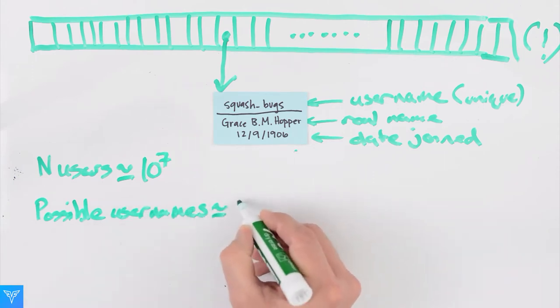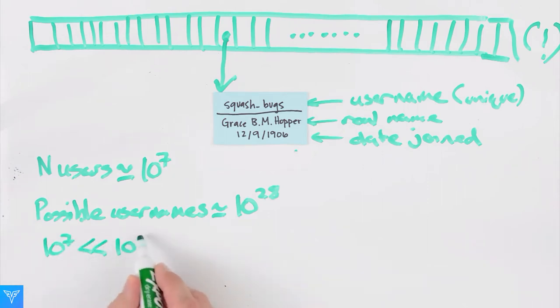We have to allocate space for all of our users. There's no way around that, but there's no way we're going to be able to allocate an array with 10 to the 28 entries.